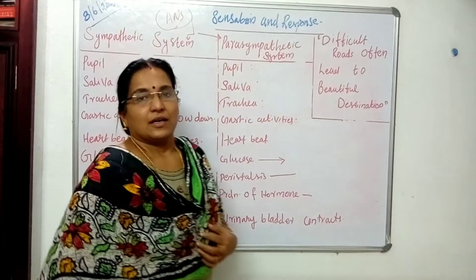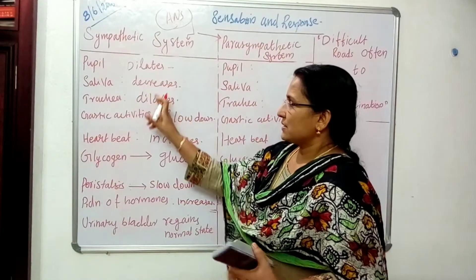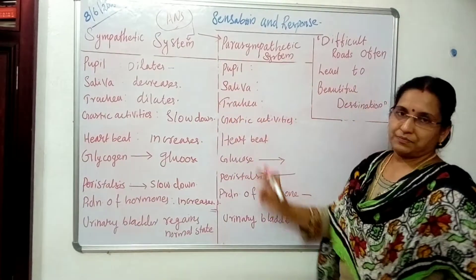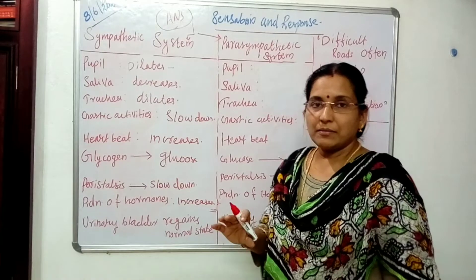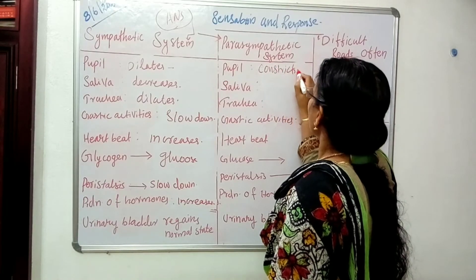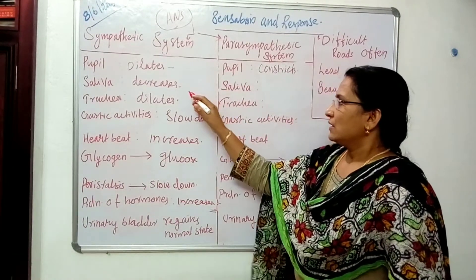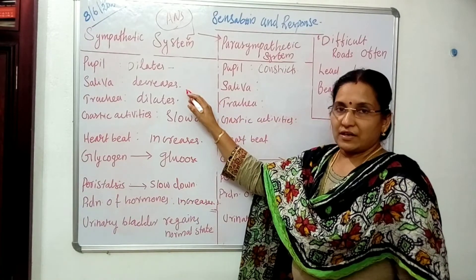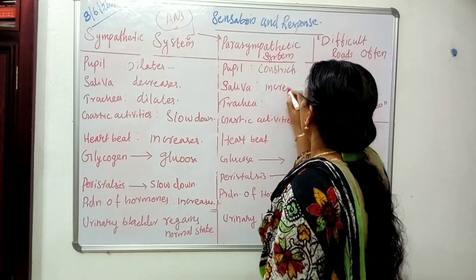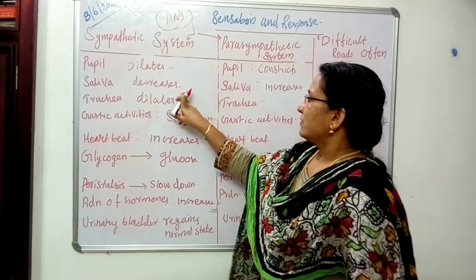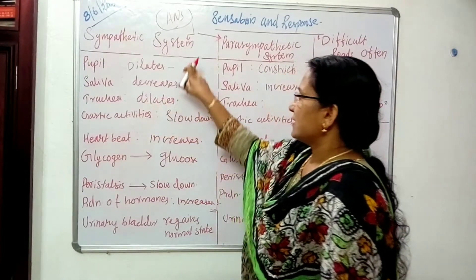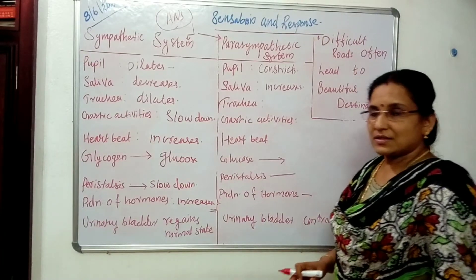During the sympathetic system, pupils dilate — in the parasympathetic system, the dilated pupils become normal, which means they constrict. Production of saliva decreases during fear, but in the normal situation under the parasympathetic system, saliva increases. Whenever we have stress or strain we are unable to talk. Trachea dilates in the sympathetic system; here in the parasympathetic system, the trachea contracts back to the normal state.